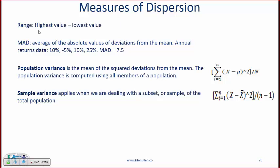Next item is measures of dispersion. How spread out is our data? The most basic measure is range which is high value minus low value.